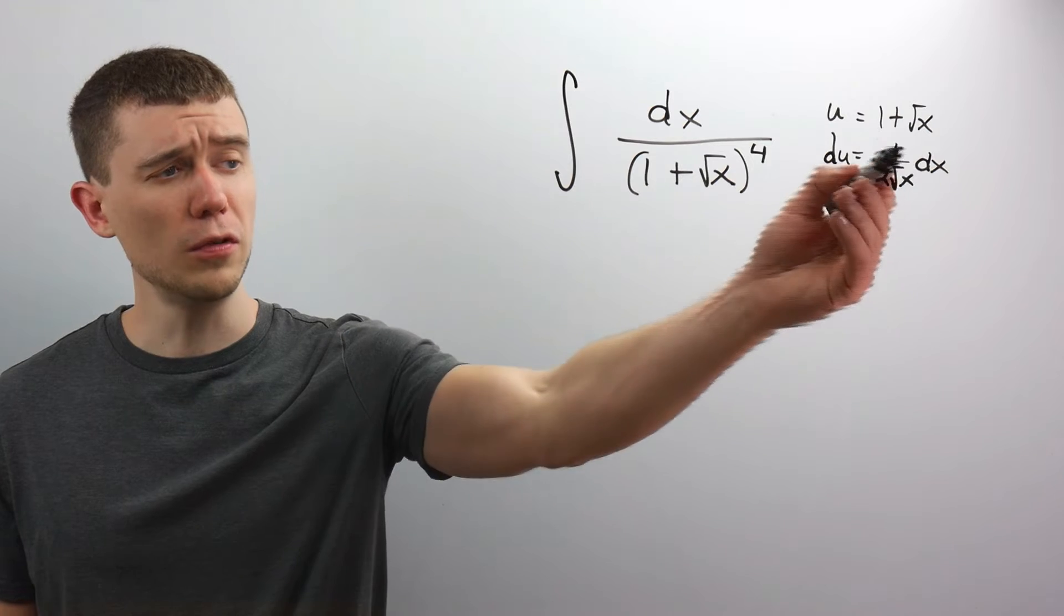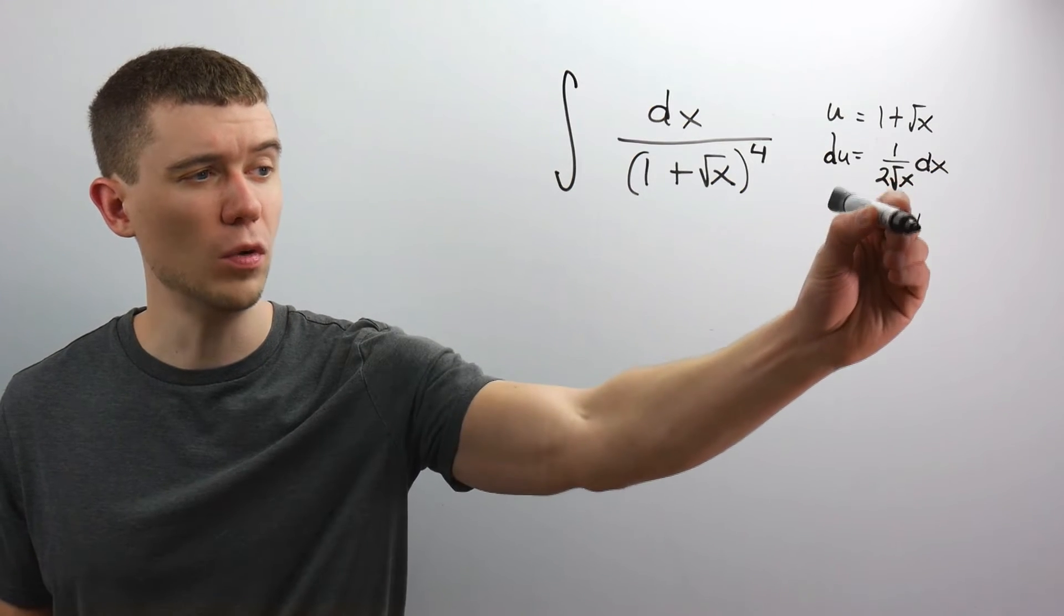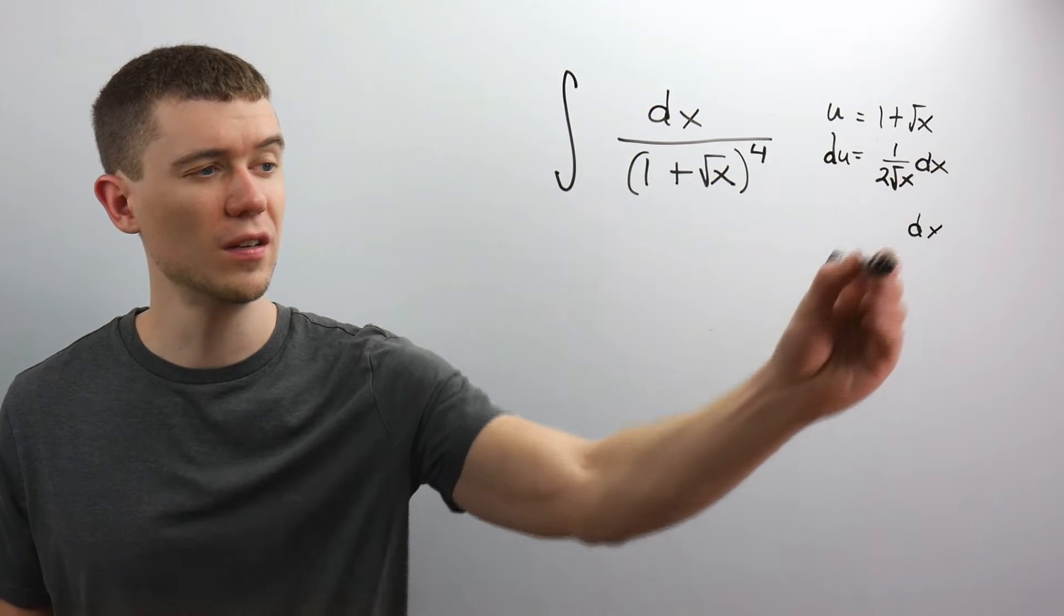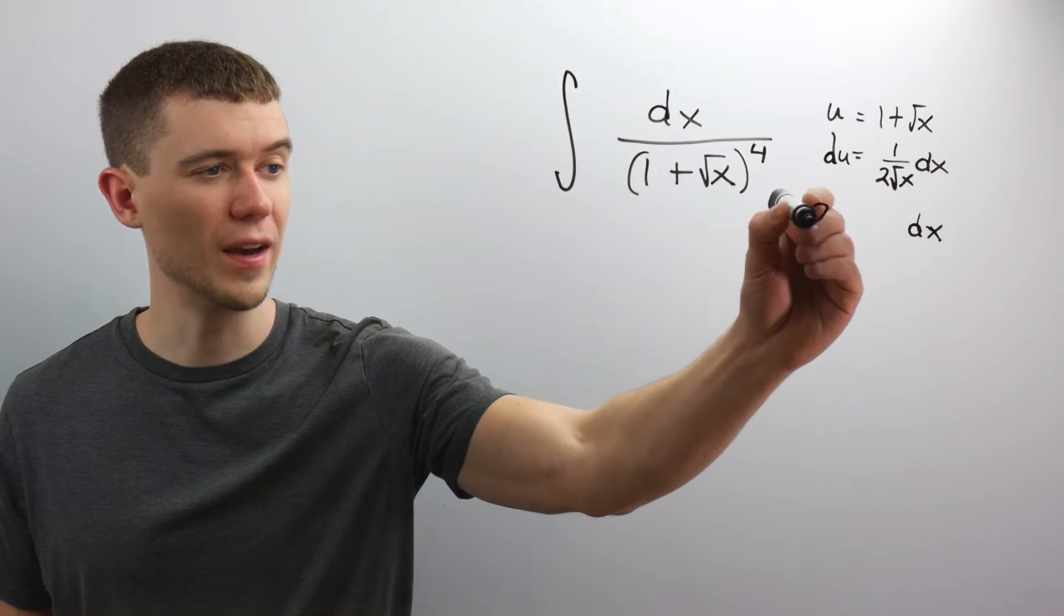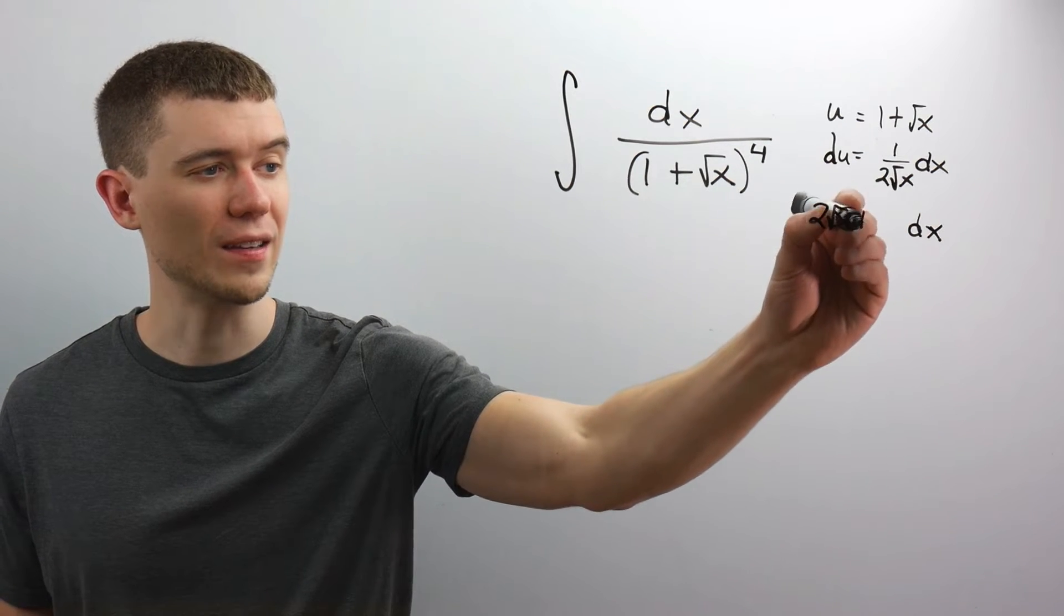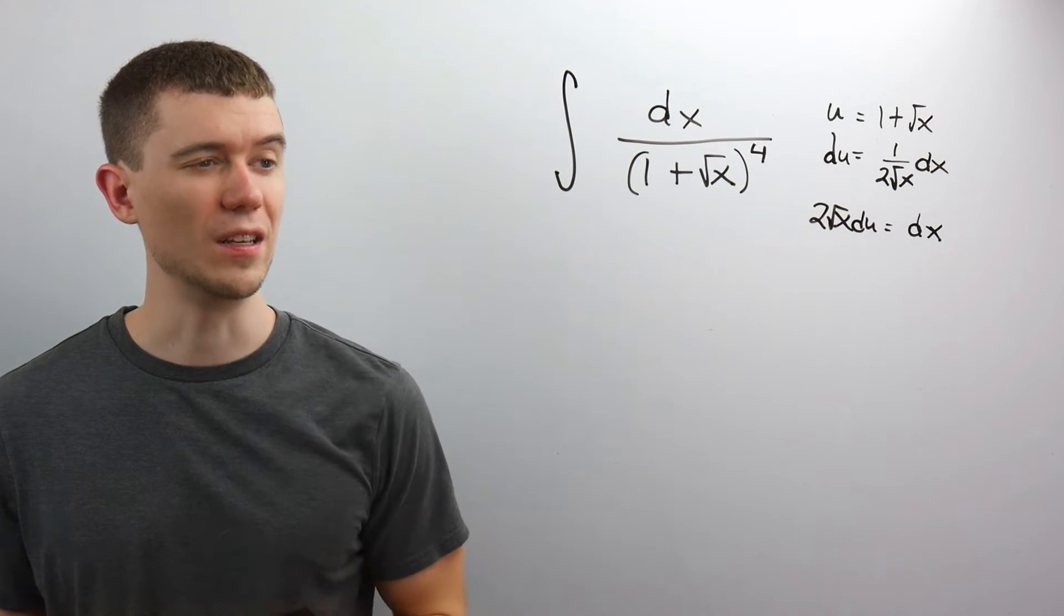Some people prefer to solve for dx here. If you want to rewrite this equation, solving for dx, multiplying both sides by 2 root x, we'd have 2 root x du. This is equal to dx.